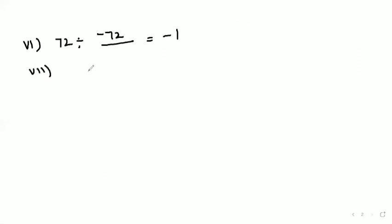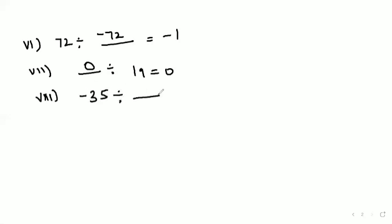Seventh part: what is divided by 19 so as to get 0? The answer is 0 — 0 divided by 19 gives 0. Eighth part: minus 35 will be divided by what number so as to get positive 35? Minus 35 divided by minus 1 gives positive 35.